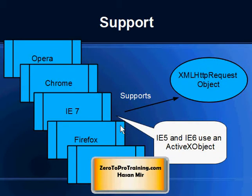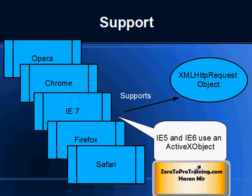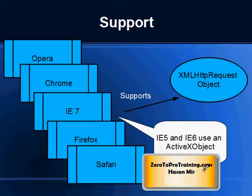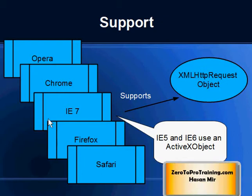All modern browsers support the XMLHTTP Request Object — Internet Explorer 7, Firefox, Chrome, Safari, and Opera all have built-in support. Older Internet Explorer versions 5 and 6 use an ActiveX Object instead.